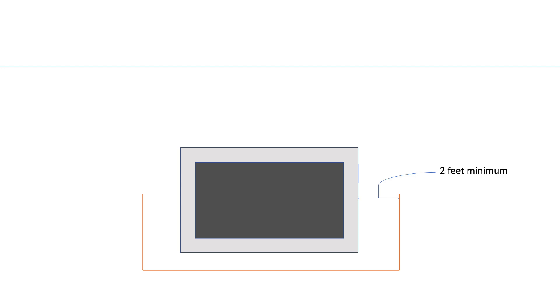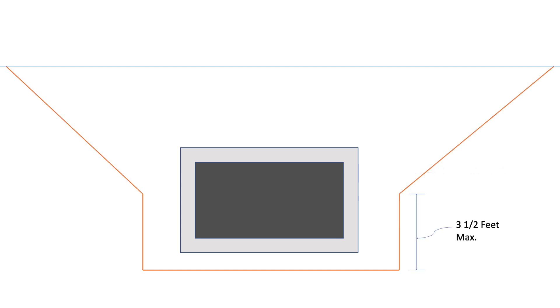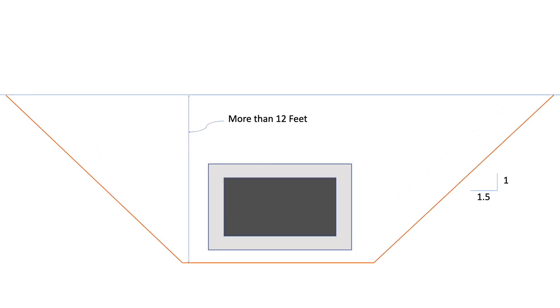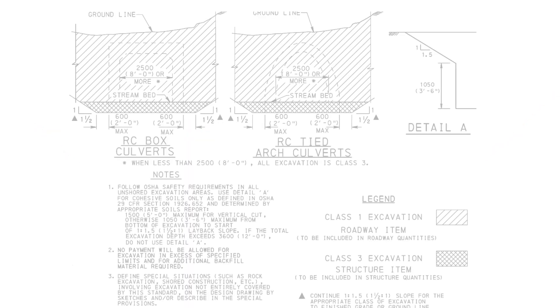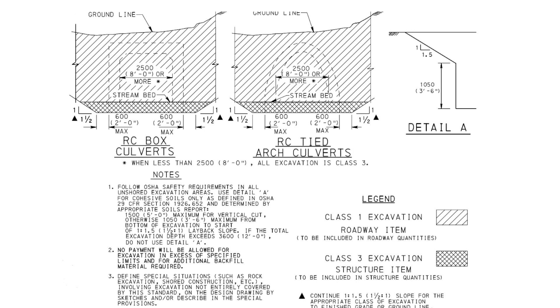Once the line and grade of the box culvert have been established, the excavation limits can be laid out. This will ensure that the equipment operator excavates enough material to provide the required amount of bedding material under the culvert — typically one foot on soil and two feet on bedrock. It will also ensure the excavation slopes are laid back far enough to provide a safe working area. The excavation should extend at least two feet beyond the edges of the culvert, up vertically no greater than three and a half feet, and then laid back on a one and a half to one slope. If the total excavation depth exceeds 12 feet, the layback will start at the bottom of the excavation. The different classes of excavation are covered in the Road Construction Standards.